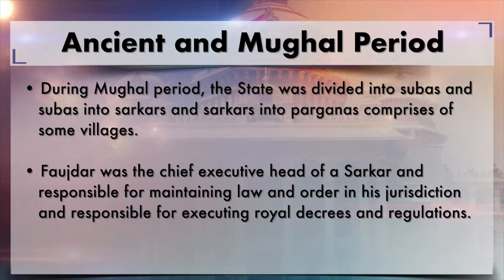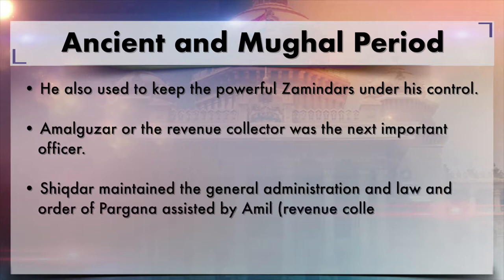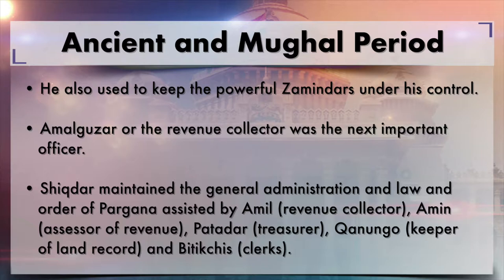At the Sarkar level, the Fosdar was the executive officer responsible for maintaining law and order and executing royal decrees — whatever orders came from the central or provincial government. He also kept the powerful Zamindars under his control to prevent revolts against the authority of the state. Another official at this level was the Amal Gujar, the revenue collector at the Sarkar level.